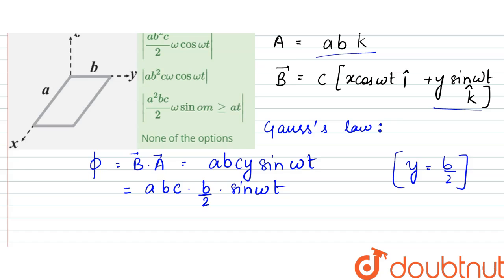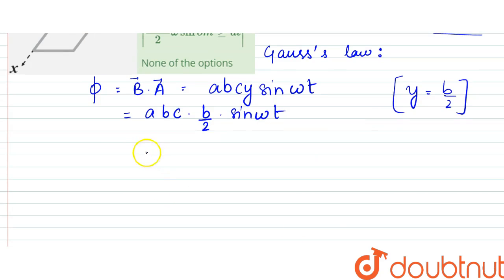Which is finally equal to AB squared C by 2 into sine omega t.